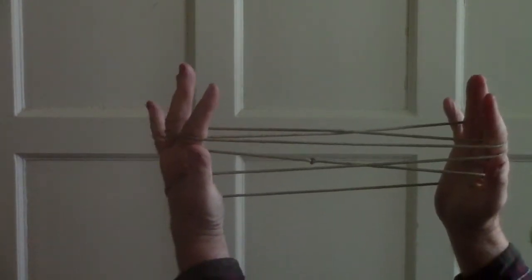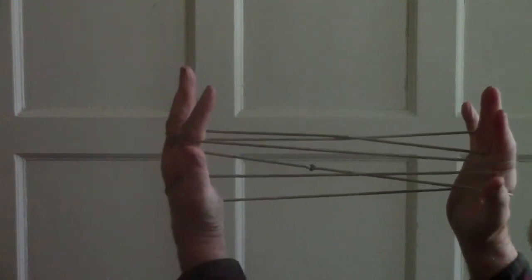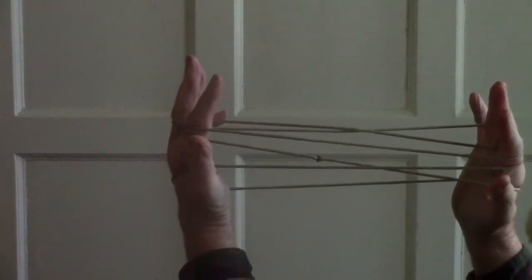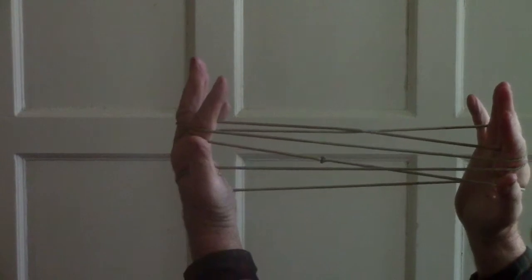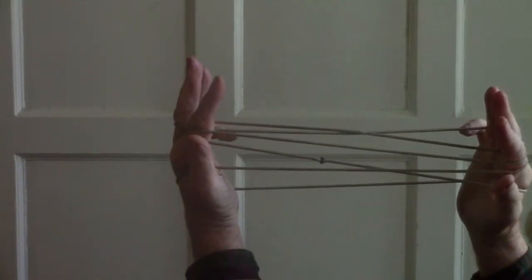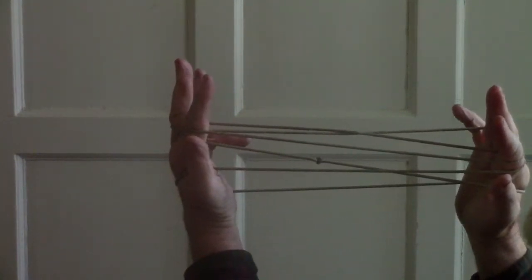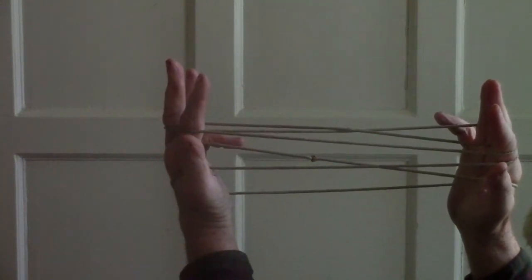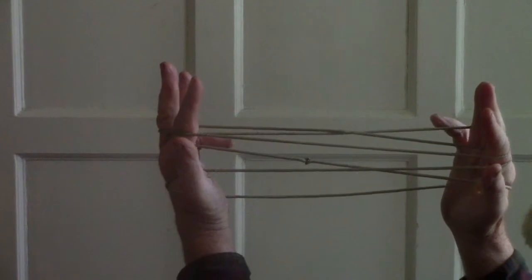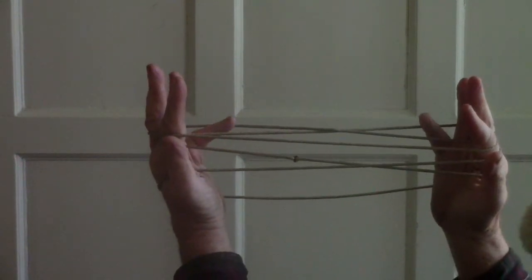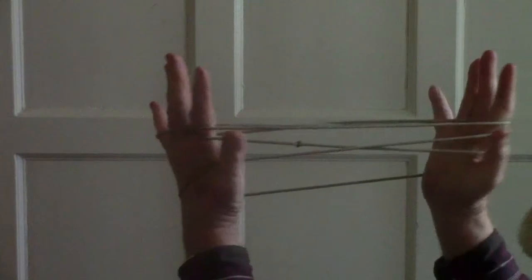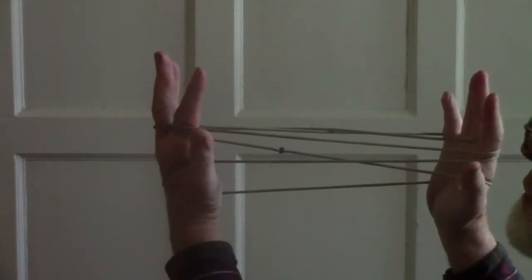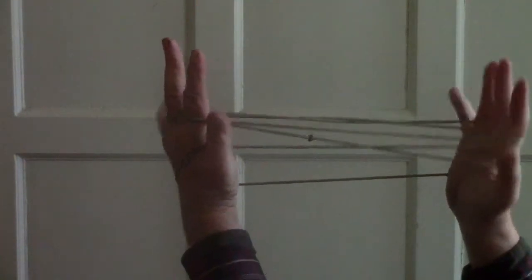Now, take the baby finger and put that underneath the far ring finger string and bring that back. Did you catch that? Let's do that again.